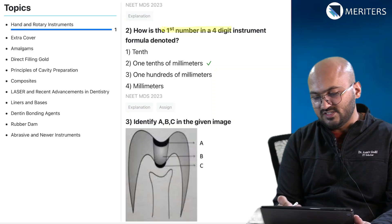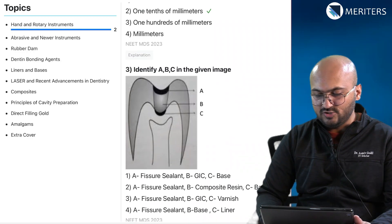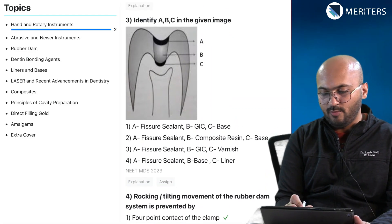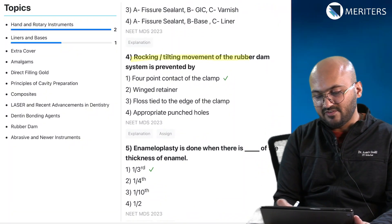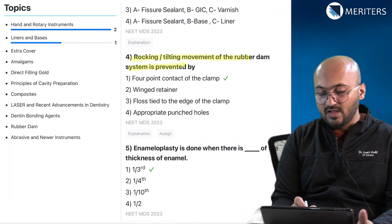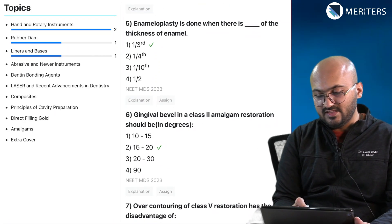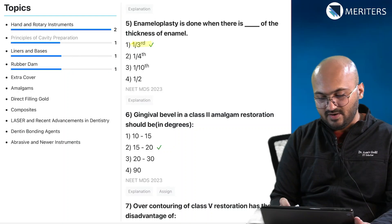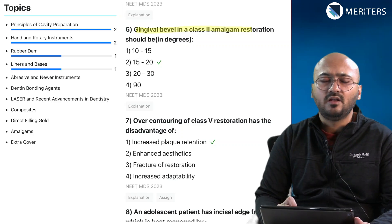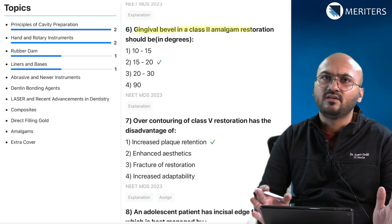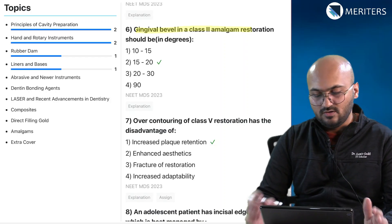Then we have instrument formula — the first digit indicates one-tenth of millimeters. That's again from hand and rotary instruments. Cavity liners and bases are very important. Rocking and tilting movement of rubber dam is prevented by parts of a rubber dam assembly, especially the clamp. Enameloplasty is done where there is one-third of thickness of enamel left.